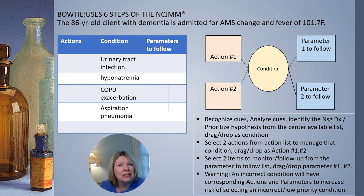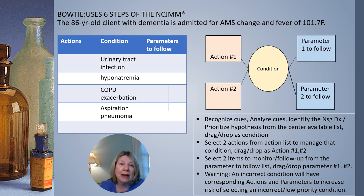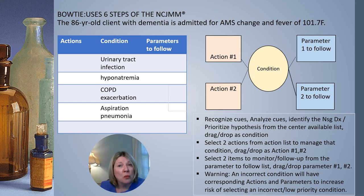You need to do those three steps to correctly start your bowtie, which begins with identifying the condition. Our client is an 86-year-old with dementia, admitted for acute mental status change and a fever of 101.7. So what is going on here?